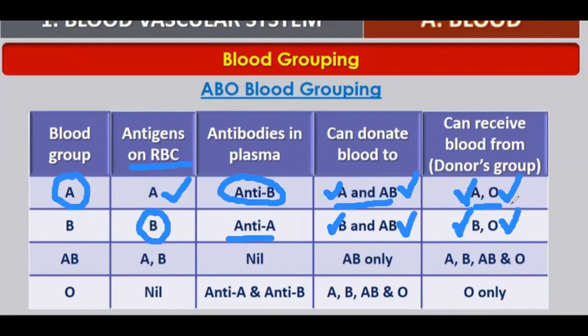Only AB blood group — they can provide blood on the surface. They can receive blood. AB blood group people can receive blood from A, B, AB, and O.